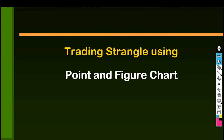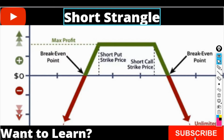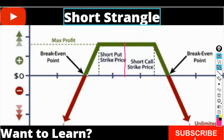Let me show you the payoff chart. This is the payoff diagram of short strangle. In this strategy, we usually sell out of the money call and out of the money put. Here is the current market price — preferably equidistance from current market price. Here is the breakeven point and the premium collected on each side. The maximum profit will be if the underlying expires between our sold call and put.